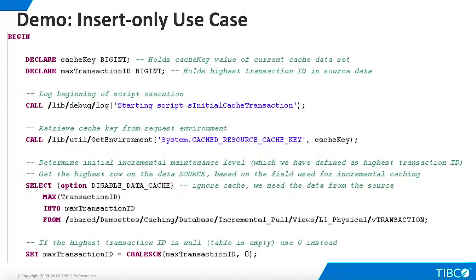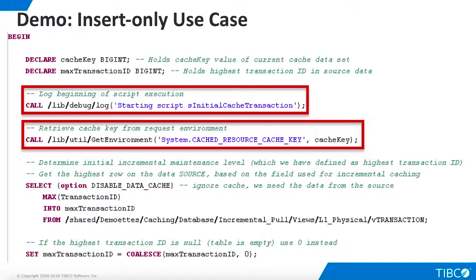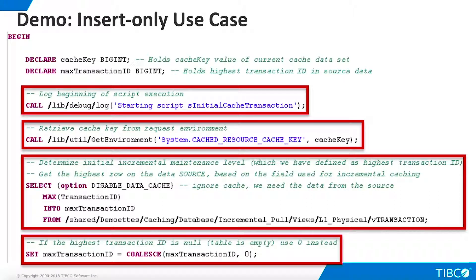We begin with some housekeeping — logging is a great way to track the progress of the scripts. Entries are written to the CS server log, which we monitor with a freeware utility called WinTail. We'll need the currently active cache key. Since we want to use the highest transaction ID as the incremental maintenance level, we retrieve it from the source data. If the source data is empty, we set the incremental maintenance level to zero.